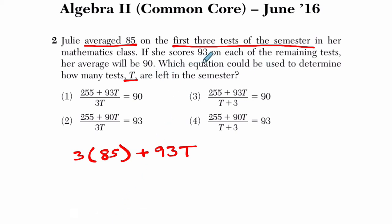And if she scores 93 on each of the remaining tests, her average will be a 90. So we take this and define the average. I'm assuming they mean a mean here. We take all of the tests, the number of tests, and divide them. We add up all the scores, excuse me, and divide by how many tests there are.